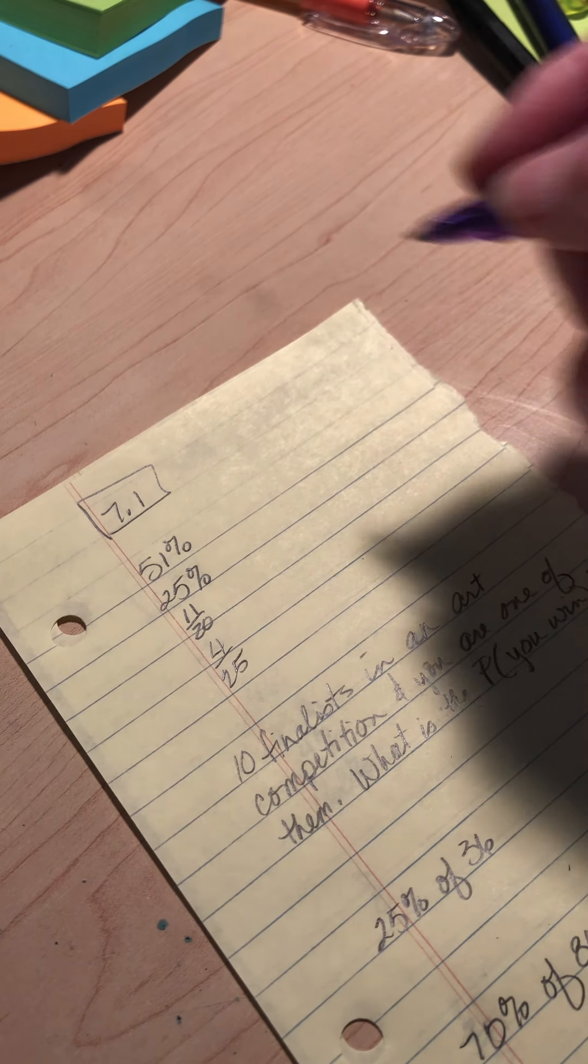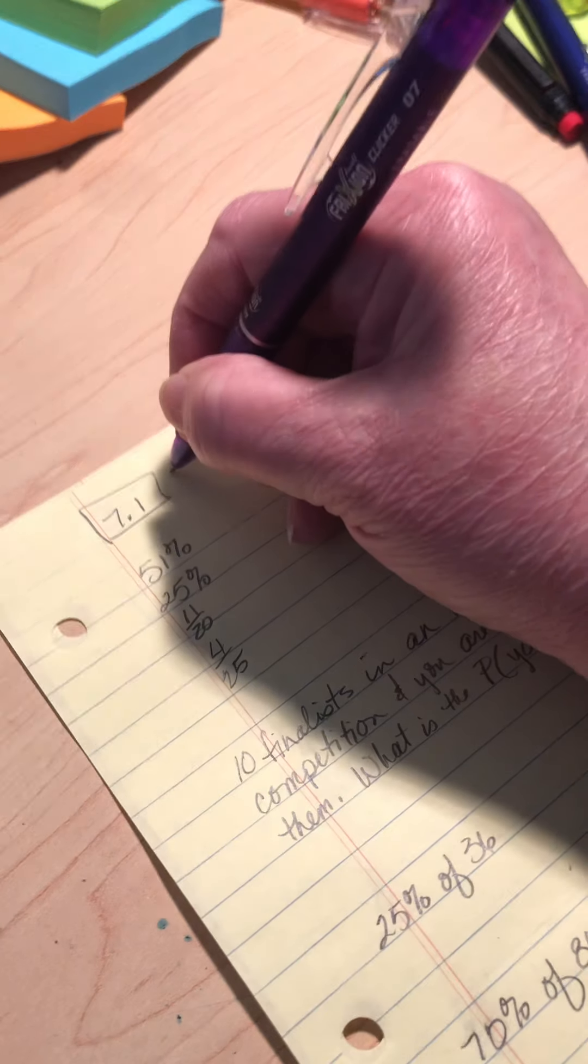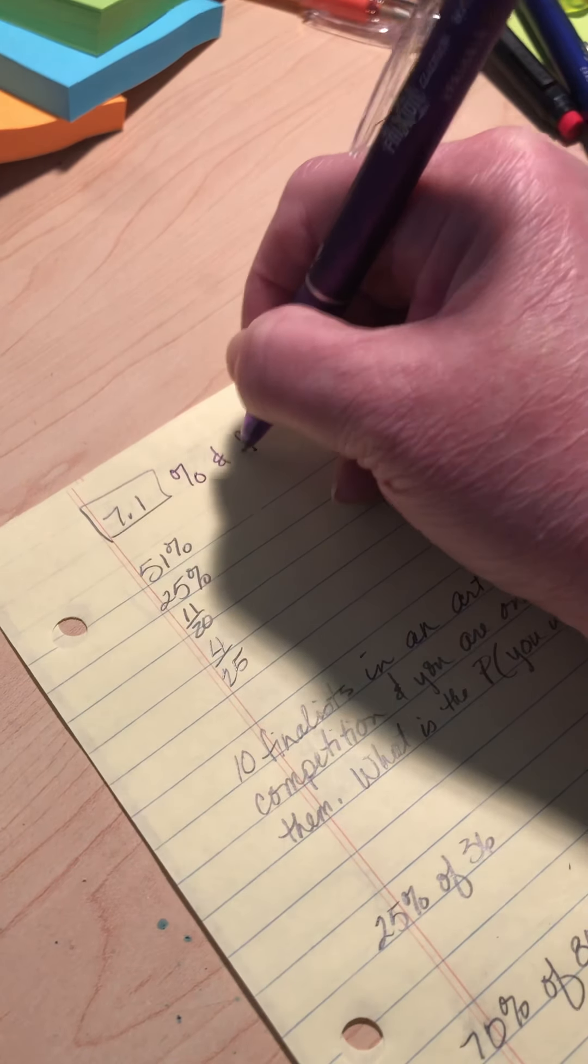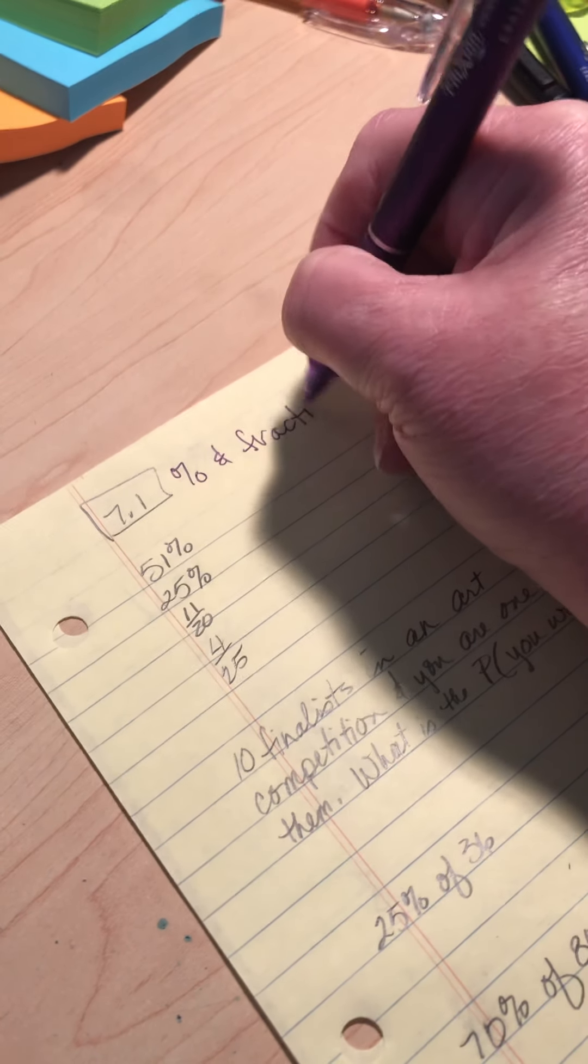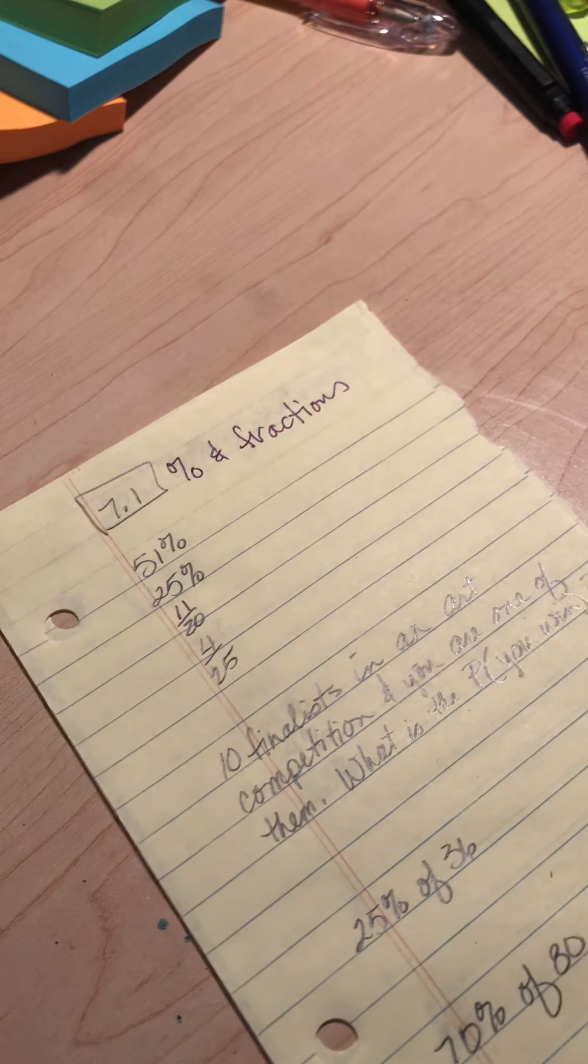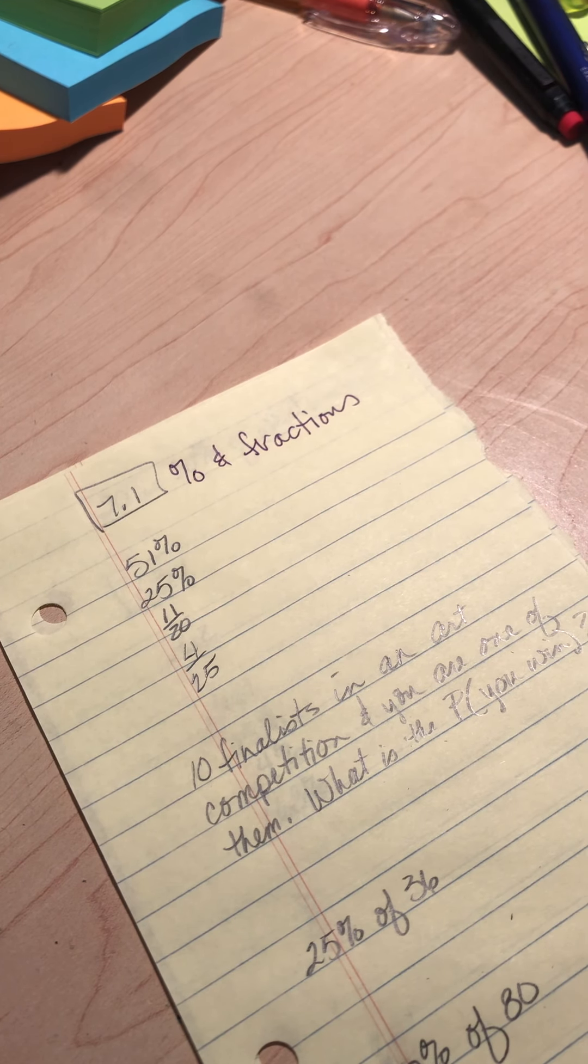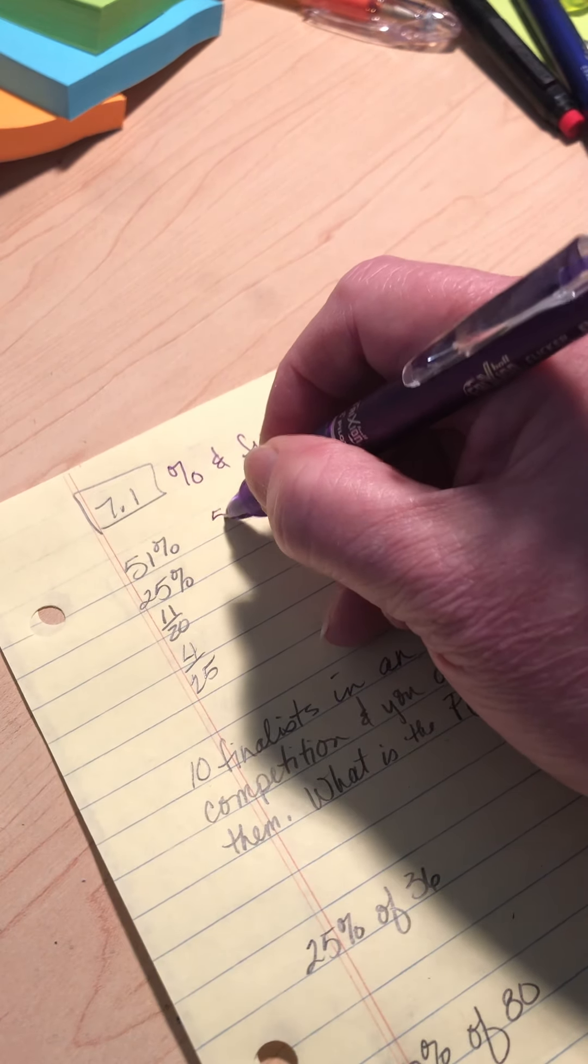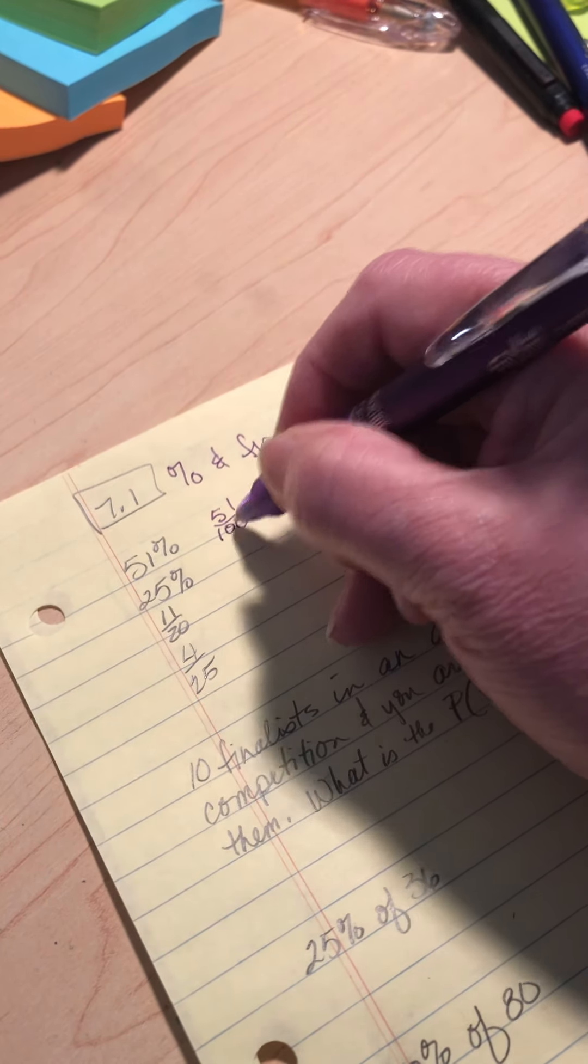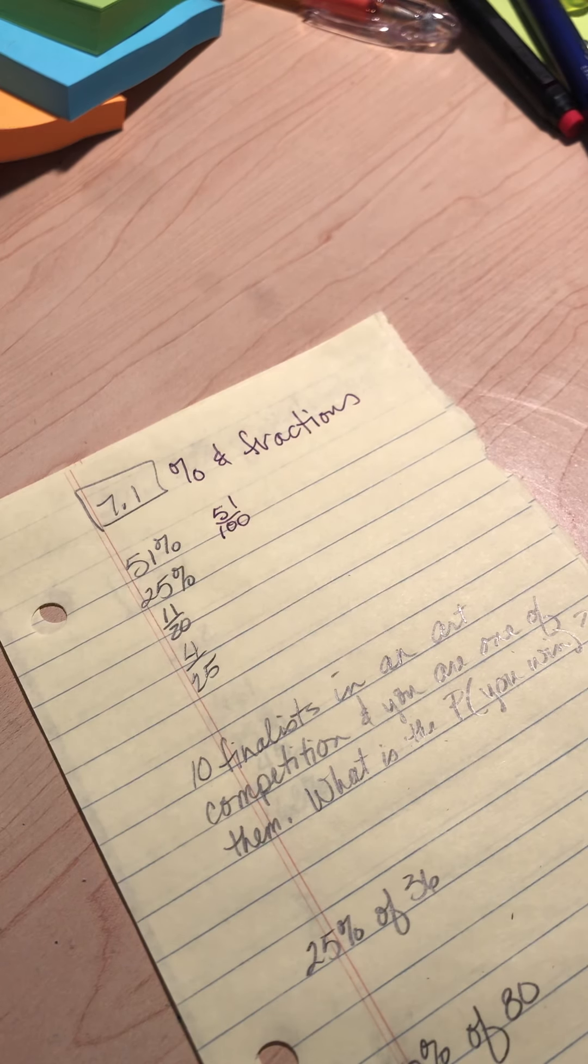So in 7.1, we talked about percents and fractions. 51% changing that to a fraction is real easy because you just put 51 over 100. 100% means hundreds.